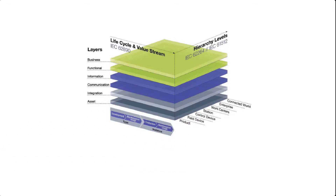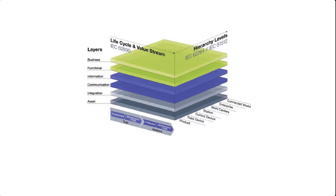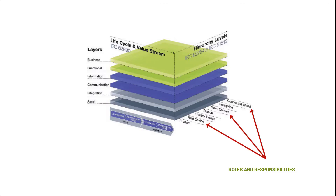Let us take a look at these three dimensions in detail, starting with the hierarchy levels dimension. This dimension essentially serves as vertical integration guidance within a factory, describing criteria for assigning factory assets within levels of a manufacturing organizational hierarchy. RAMI 4.0 represents the levels of an organizational hierarchy to which an asset could be assigned by defining roles and responsibility within a manufacturing facility. However, RAMI doesn't define these levels from the ground up; instead, it uses the ISA 95 hierarchy levels that are already being used for implementing most factories today.